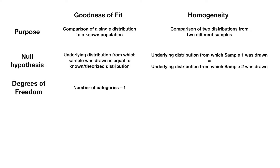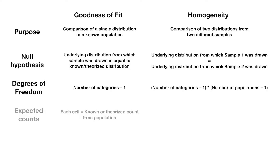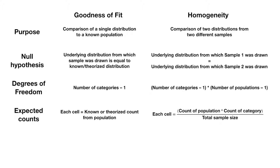The degrees of freedom in the goodness-of-fit test is the number of categories minus one. In a homogeneity test, it's the number of categories minus one times the number of populations minus one. The expected counts in a goodness-of-fit test involves each cell equaling some known or theorized count from a population, whereas in the homogeneity test, each cell equals the count of that population times the count of that category divided by the total sample size.